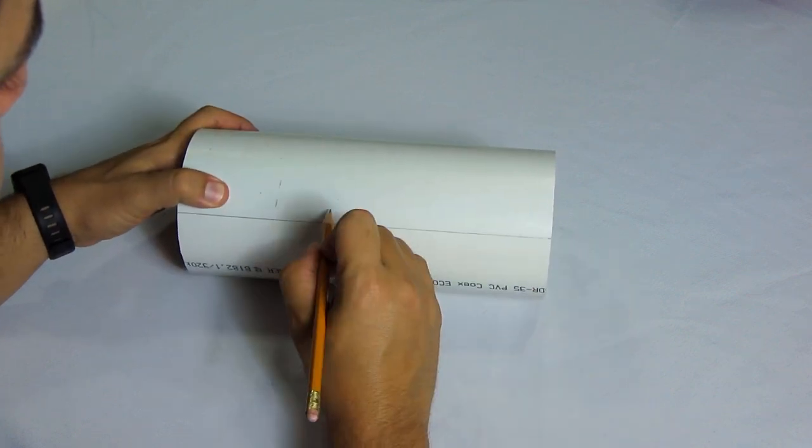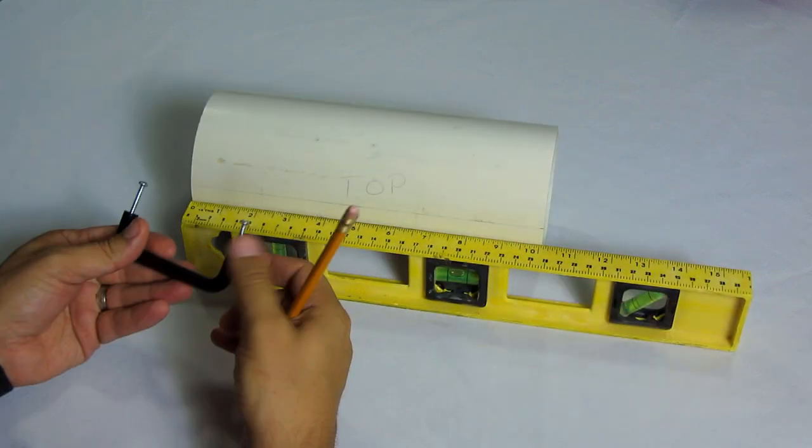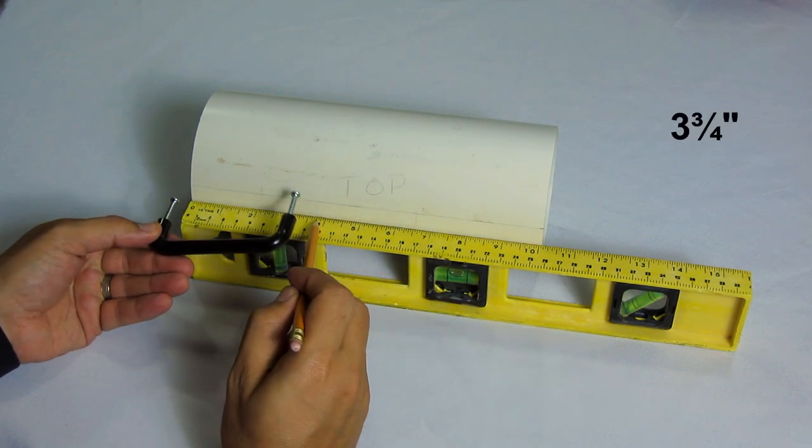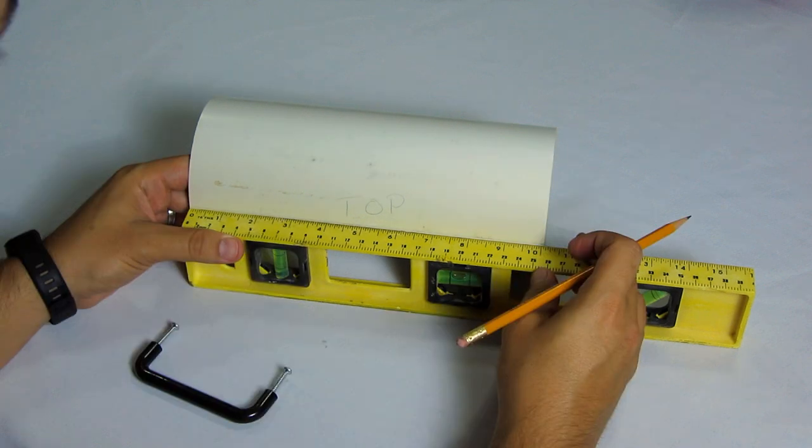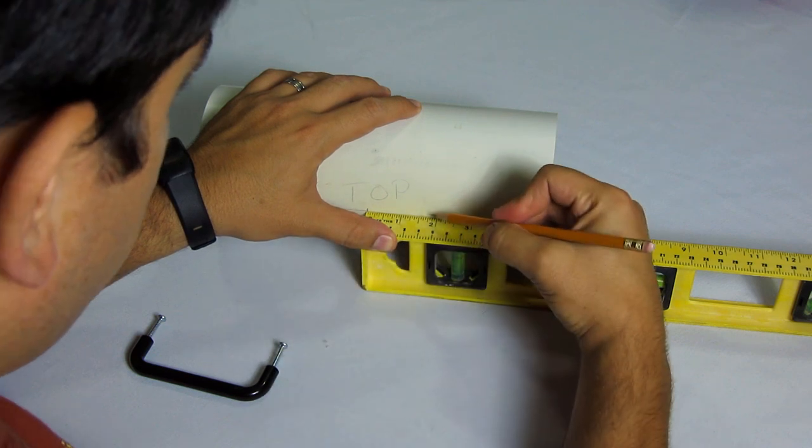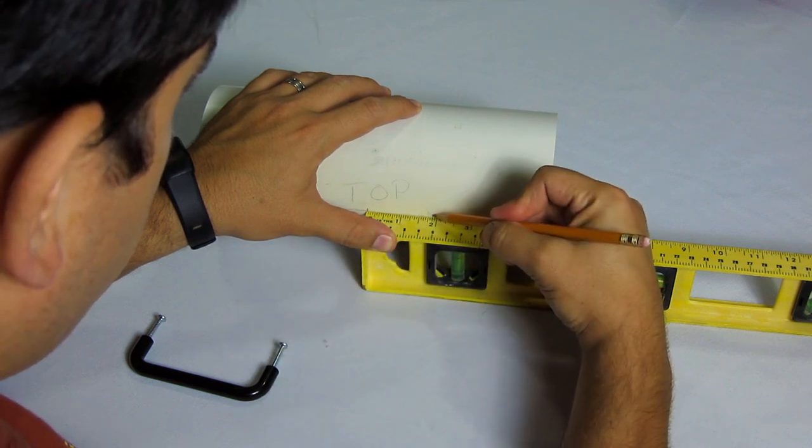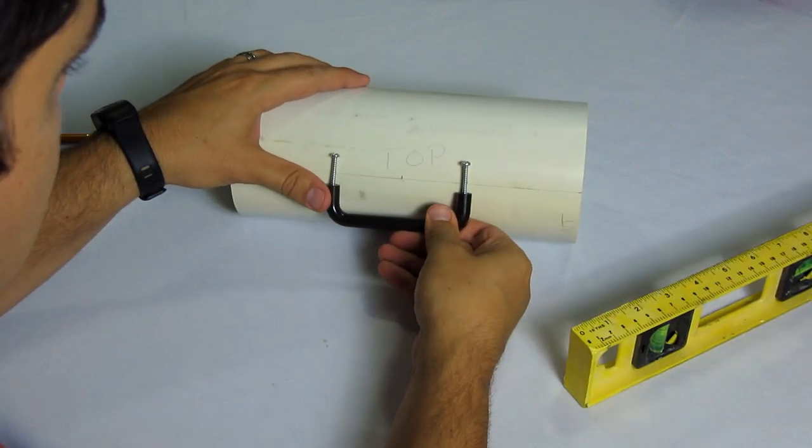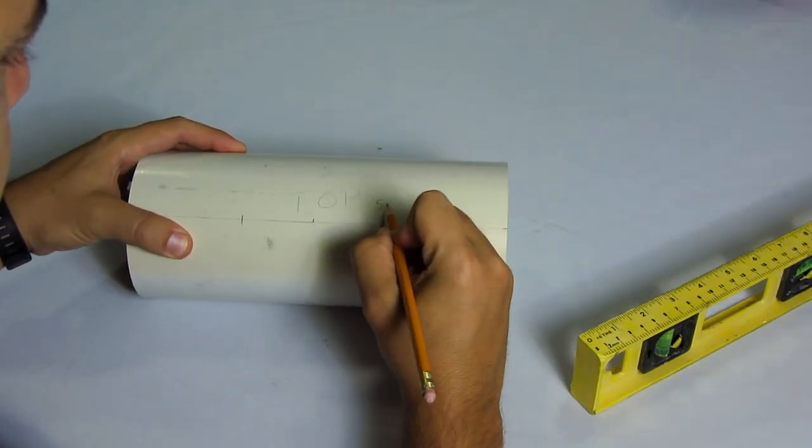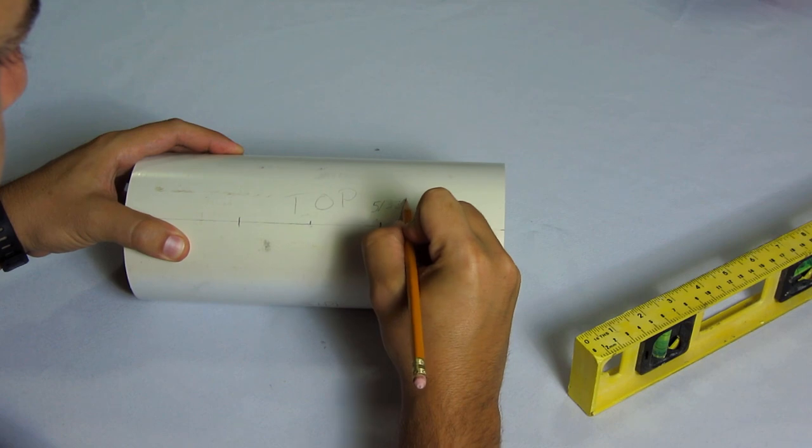Now that we've decided what is top, we can mark where the holes for the handle need to go. First, we need to know the distance between the two screws. In this case, that's 3 3/4 inches. Divide that by 2 and you get 1 7/8. So, start by marking the very center of the pipe at 5 inches. Then we need to mark 1 7/8 either side of that mark. Once both are marked, check that it actually matches the handle. These holes need to be 5/32 of an inch big so the screws can fit through, so I'm going to mark that here too.